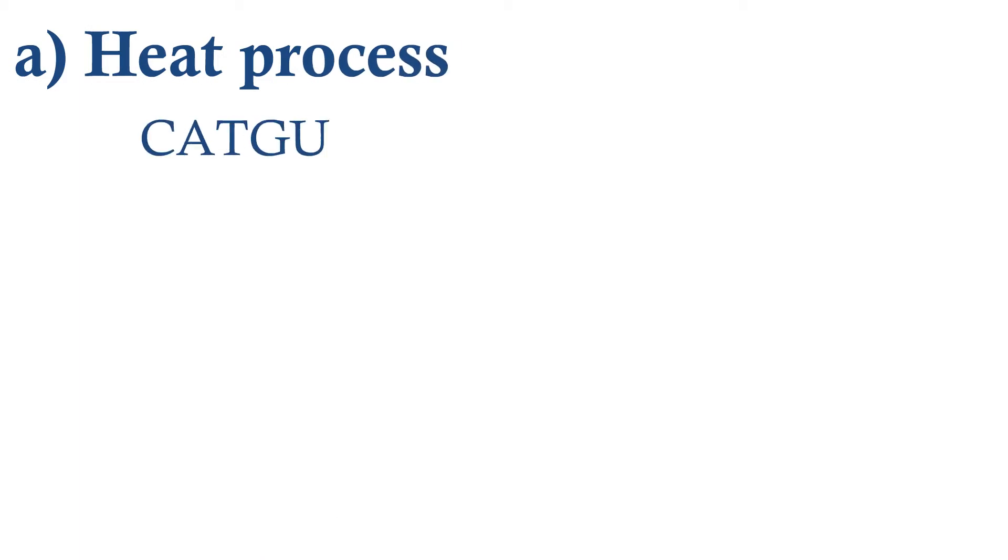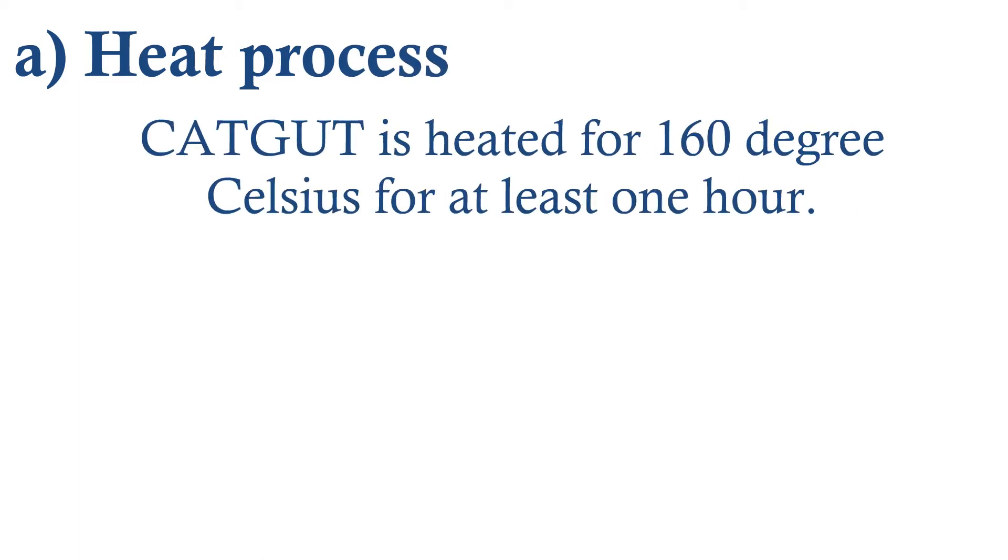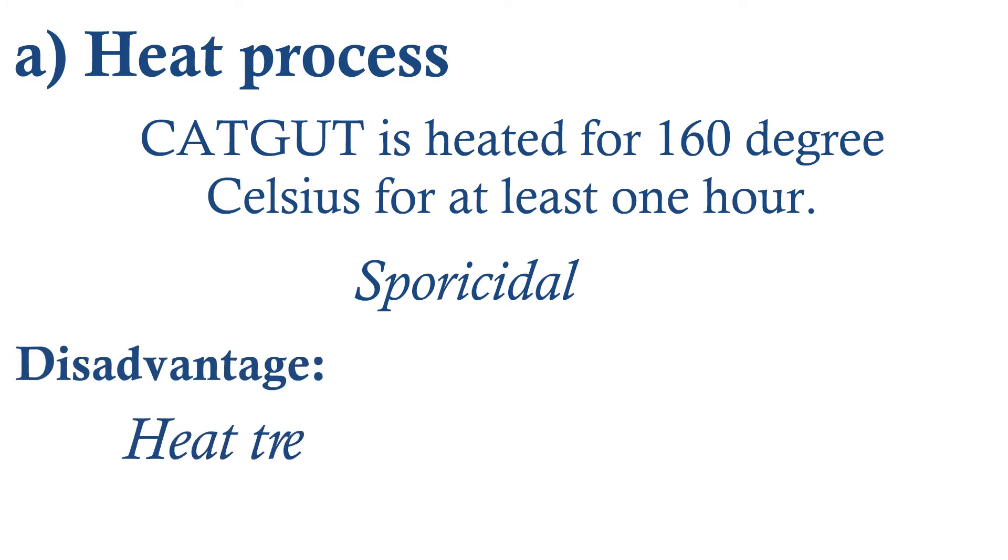In the heat process, the catgut is heated for 160 degrees Celsius for at least one hour, which serves the sporicidal purpose. The disadvantage of this process is that heated strings become too stiff.